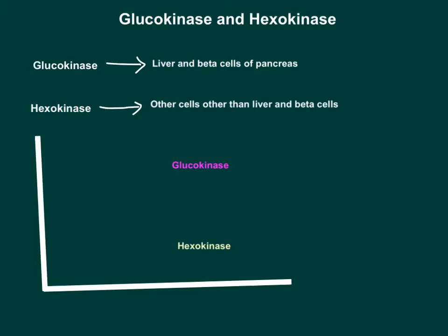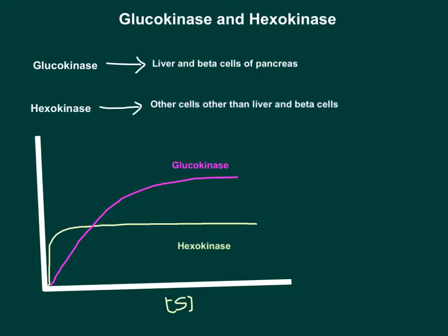Before we get into the kinetics, let me draw the glucokinase and hexokinase reaction velocity curves. The x-axis is substrate concentration — that is, glucose concentration. The reaction velocity curve for hexokinase shoots up and then saturates thoroughly, whereas the reaction velocity curve for glucokinase follows a different pattern.